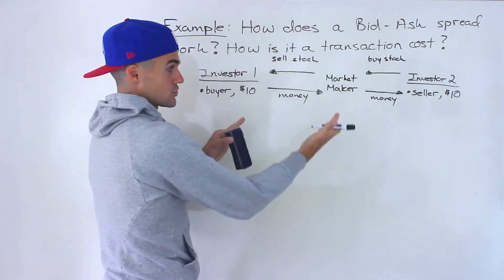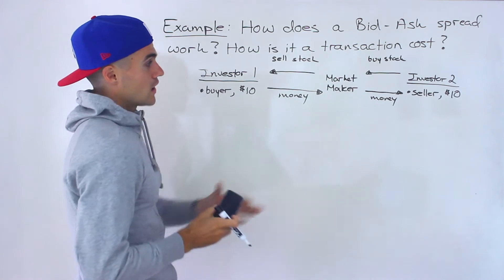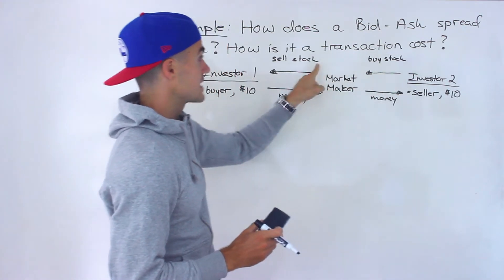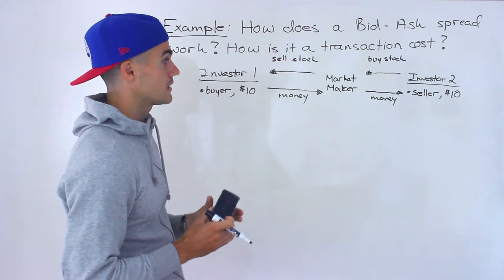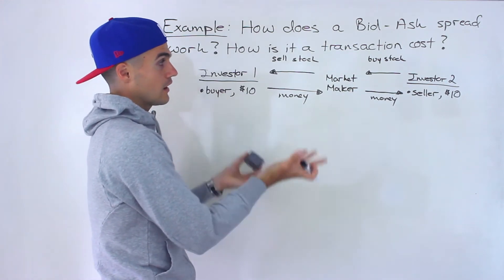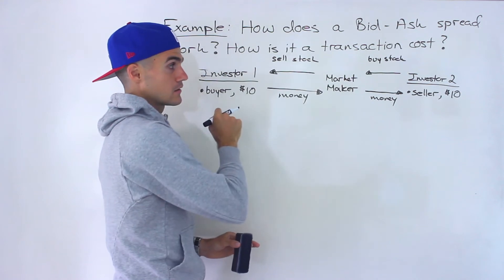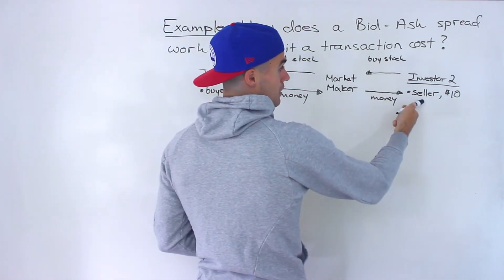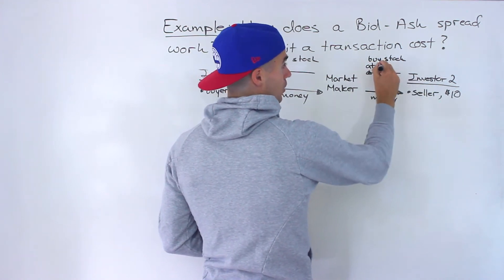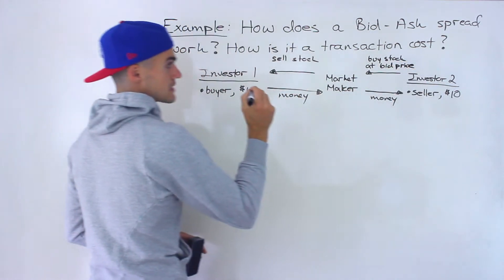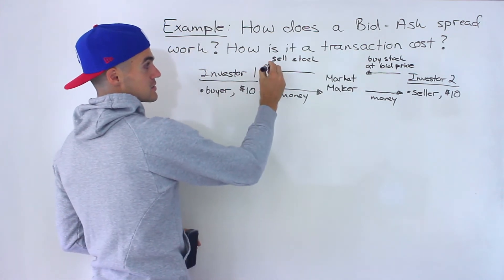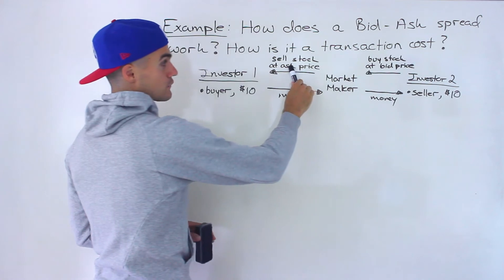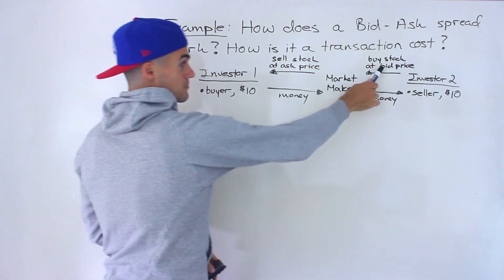Obviously, they're not going to do this for free. They're not going to buy the stock for $10 from the seller and then sell it to you for $10 — there wouldn't be any cut that they're taking. So the way they take their cut is by buying the stock from the seller at something called the bid price, and selling the stock to the buyer at something called the ask price. Both of these prices are different.